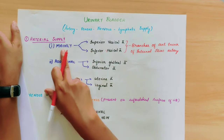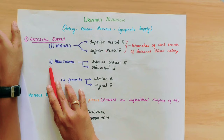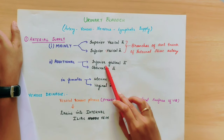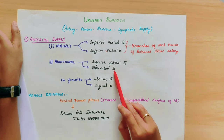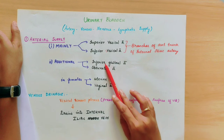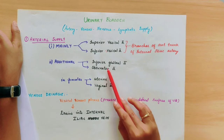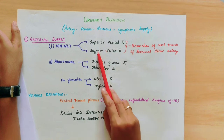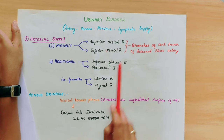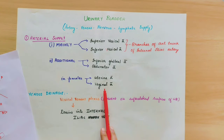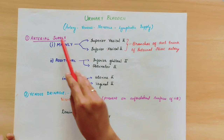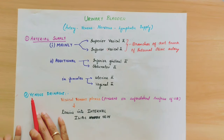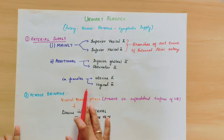The two branches supply the urinary bladder. Additional branches from the anterior division include the inferior gluteal artery and obturator artery. In the female, the additional branches are the uterine artery and vaginal artery. This is all about the arterial supply of the urinary bladder.